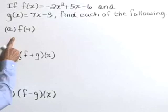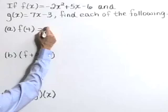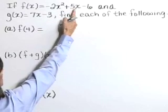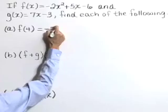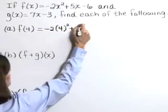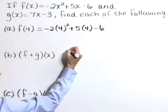Starting with part A, we'd like to find f of 4. So substitute 4 for x in the function f.